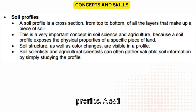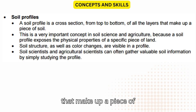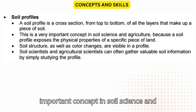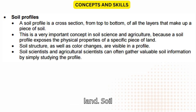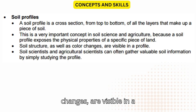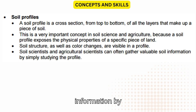Soil Profiles. A soil profile is a cross-section, from top to bottom, of all the layers that make up a piece of soil. This is a very important concept in soil science and agriculture, because a soil profile exposes the physical properties of a specific piece of land. Soil structure as well as color changes are visible in a profile. Soil scientists and agricultural scientists can often gather valuable soil information by simply studying the profile.